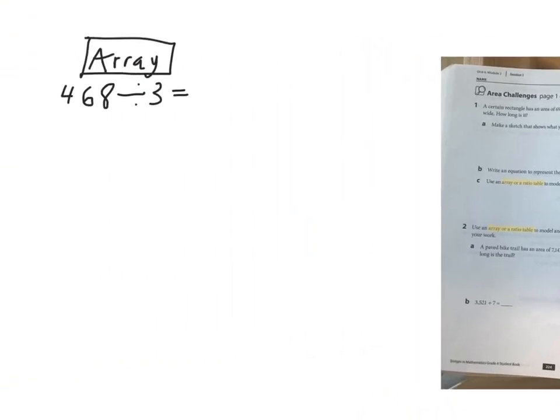We'll go with the array method first. We're going to do 468 divided by 3. Here we're basically making a little series of rectangles, not one rectangle, to get us up to 468. Start with numbers that are easy for you.